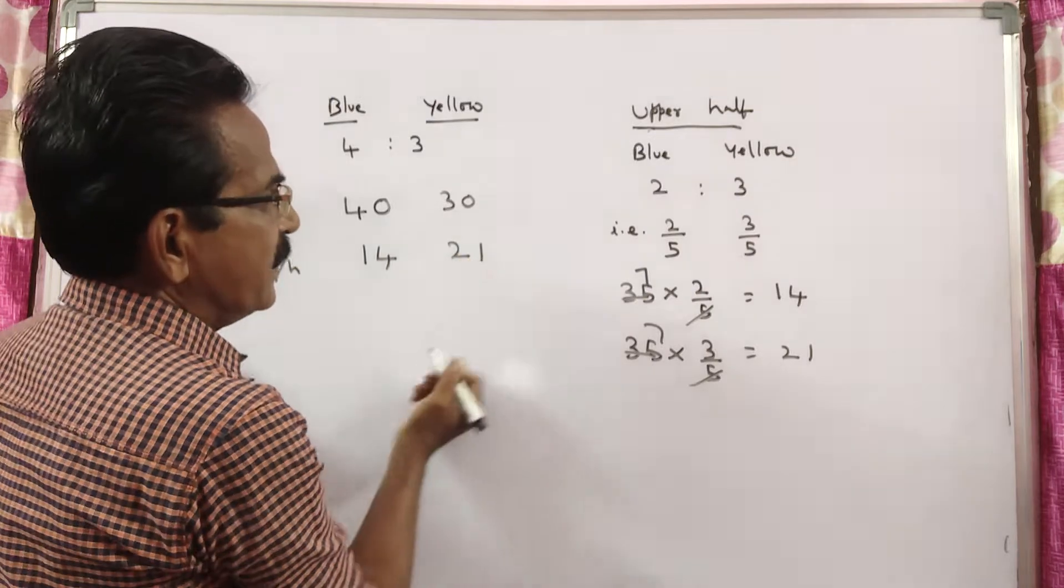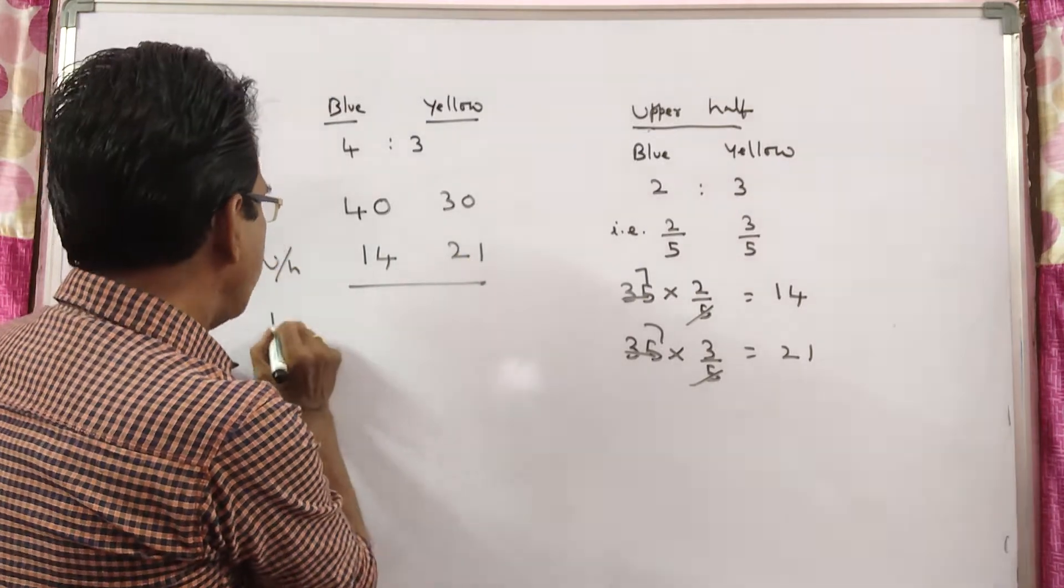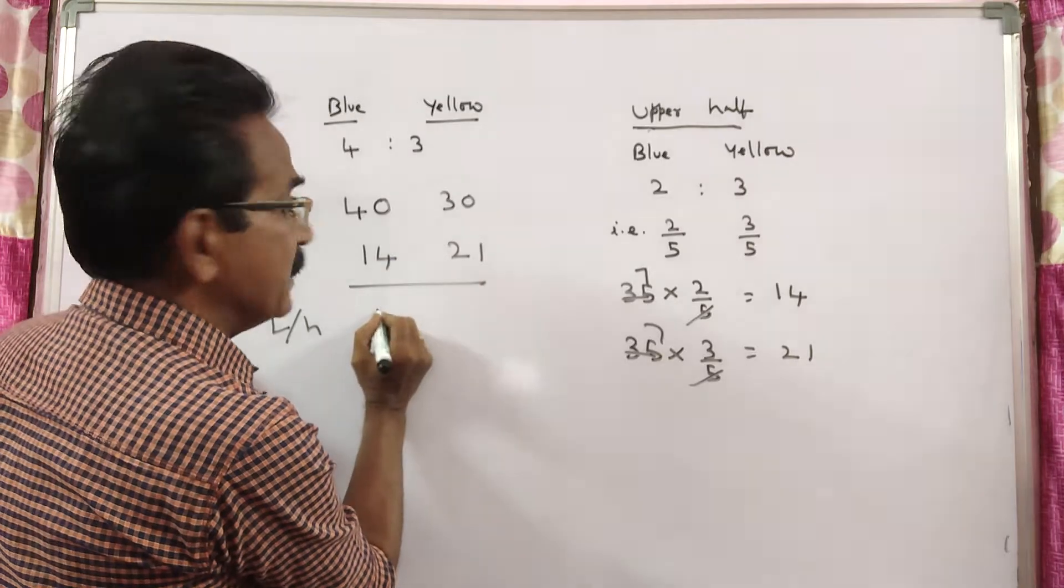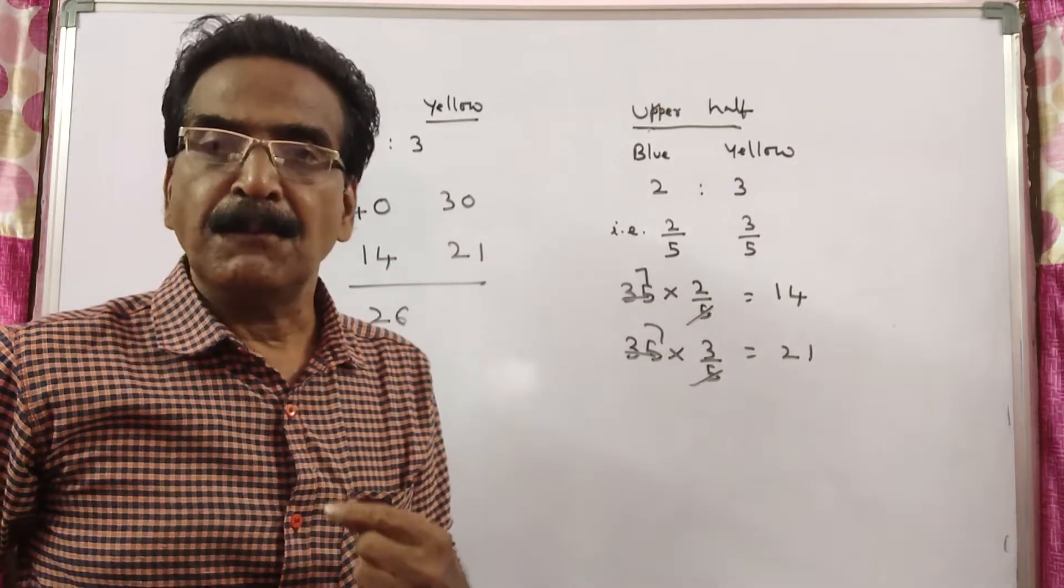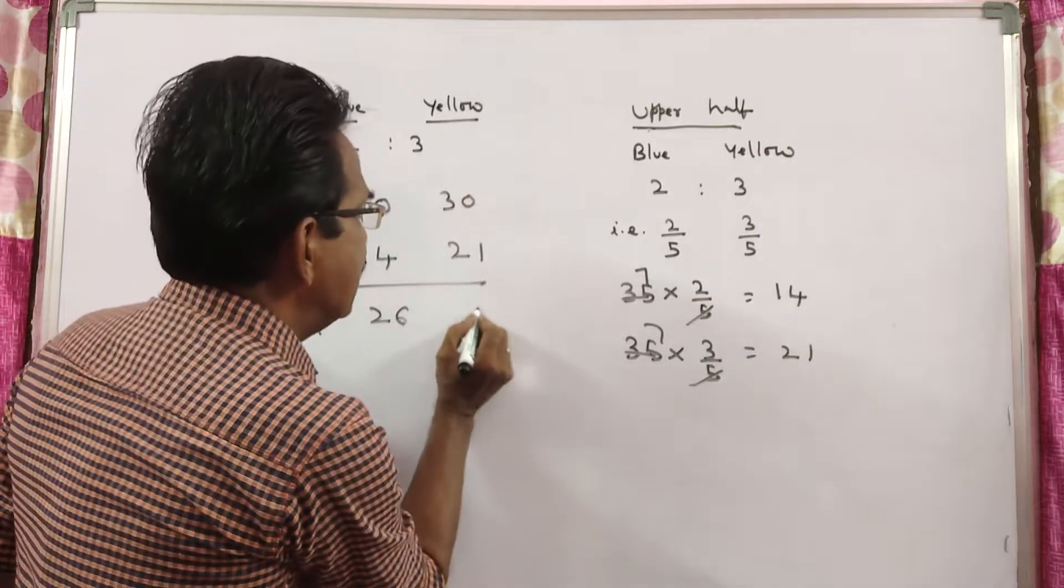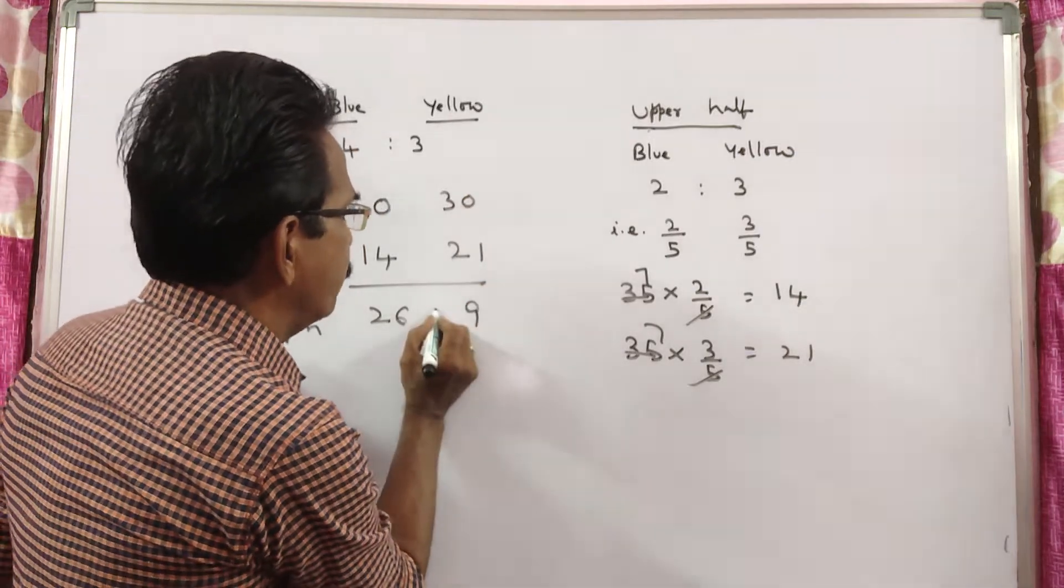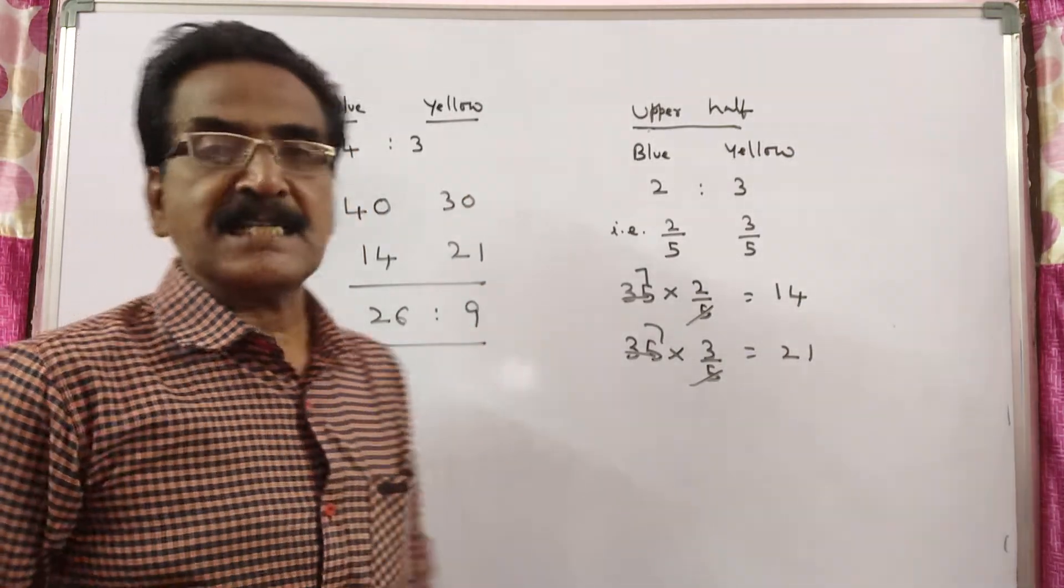So in the lower half, 26 units of blue is painted, 9 units of yellow is painted.